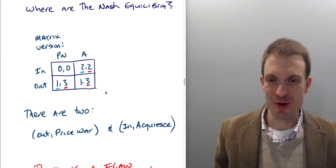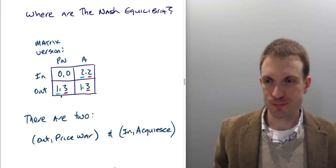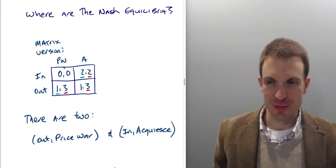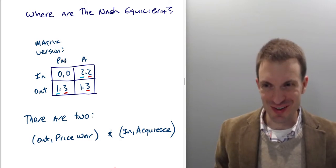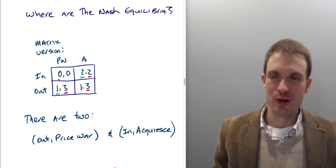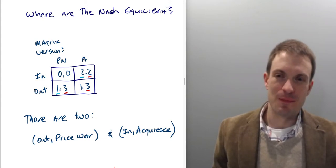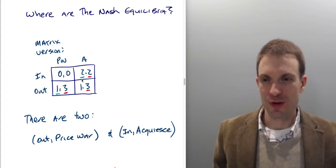Let's look for Nash equilibria in the matrix game to motivate why SPNE is interesting. Using the best response approach: if the column player chooses price war, the row player gets zero by choosing 'in' or one by choosing 'out,' so the best response is to stay out. If the column player chooses acquiesce and the row player comes in, they get two; if they stay out, they get one — so the best response to acquiesce is 'in.'